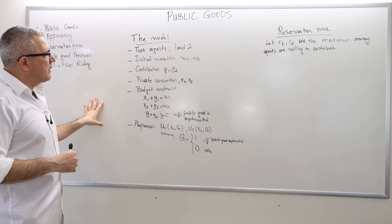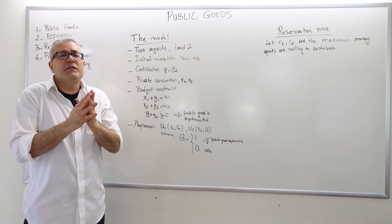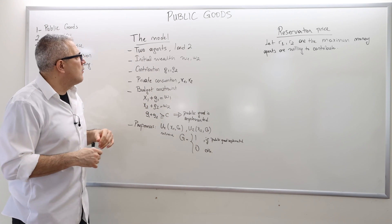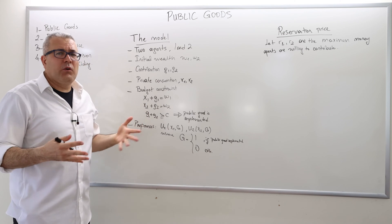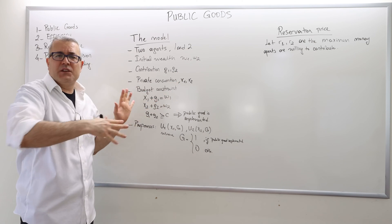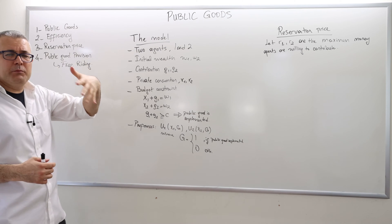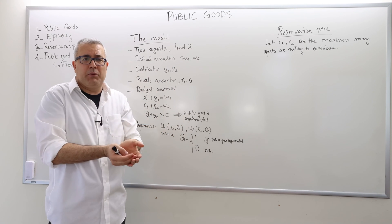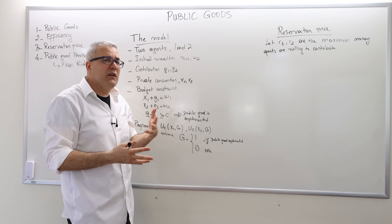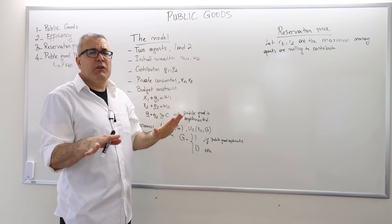So here is the simple model we have. We have, just for simplicity, two agents — agent one and agent two. It really doesn't make any difference if we have more than two agents. If we have only one agent, everything here would go through, but the public good provision problem would be trivial because the public consists of just one agent. So it makes more sense to have at least two agents, though three or five agents makes no difference.